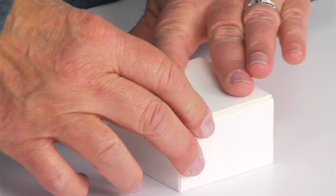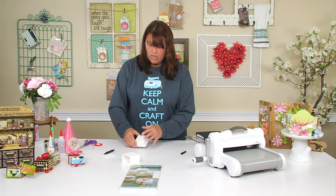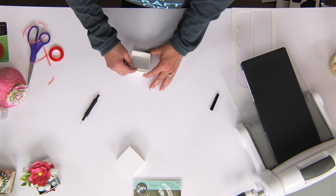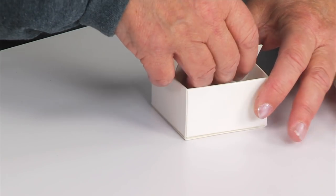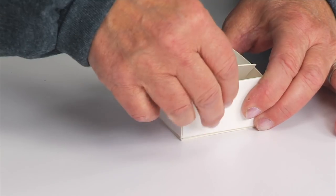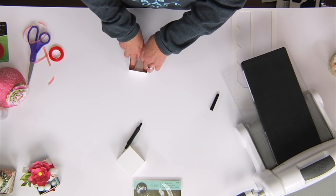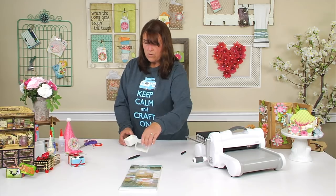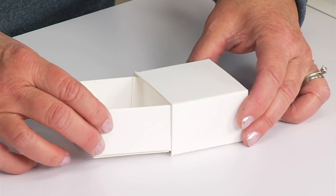Then you can kind of position it where you want. Now on the inside you'll notice that's not that bad, but sometimes I add another square inside the box just to firm it up and it looks prettier too. And you don't really even need to add adhesive to that. And then you're just going to slide that inside your drawer.